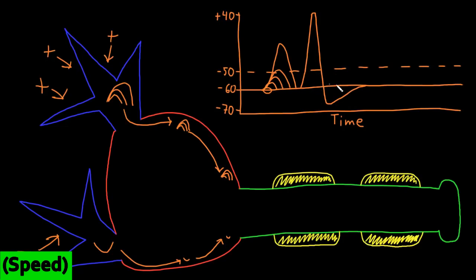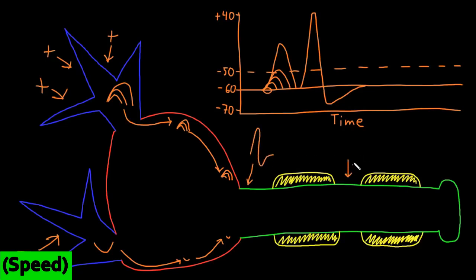The duration of an action potential is also usually consistent for any particular neuron — it's usually pretty quick, just a few milliseconds. Graded potentials can also be fast, but they can also be much, much longer and have a wide range of durations based on the duration of their inputs. Another big difference is that action potentials usually do not decay with distance like graded potentials do. Action potentials are conducted down an axon unchanged no matter how long the axon is — whether you check at the trigger zone, halfway down, or at the very end even if it's a meter or more, it has the exact same shape.